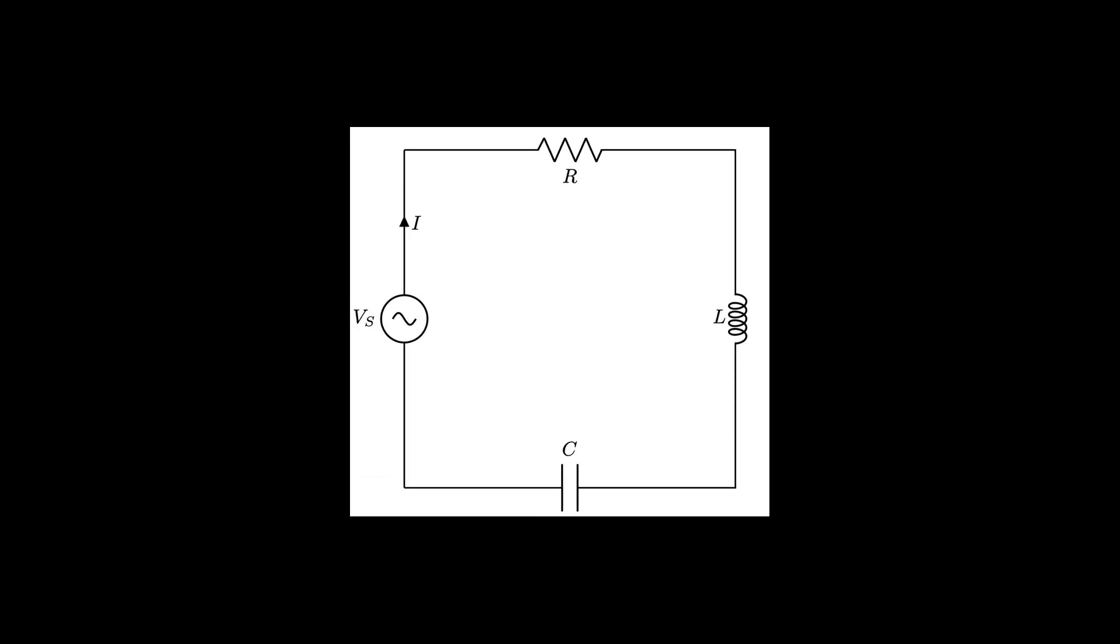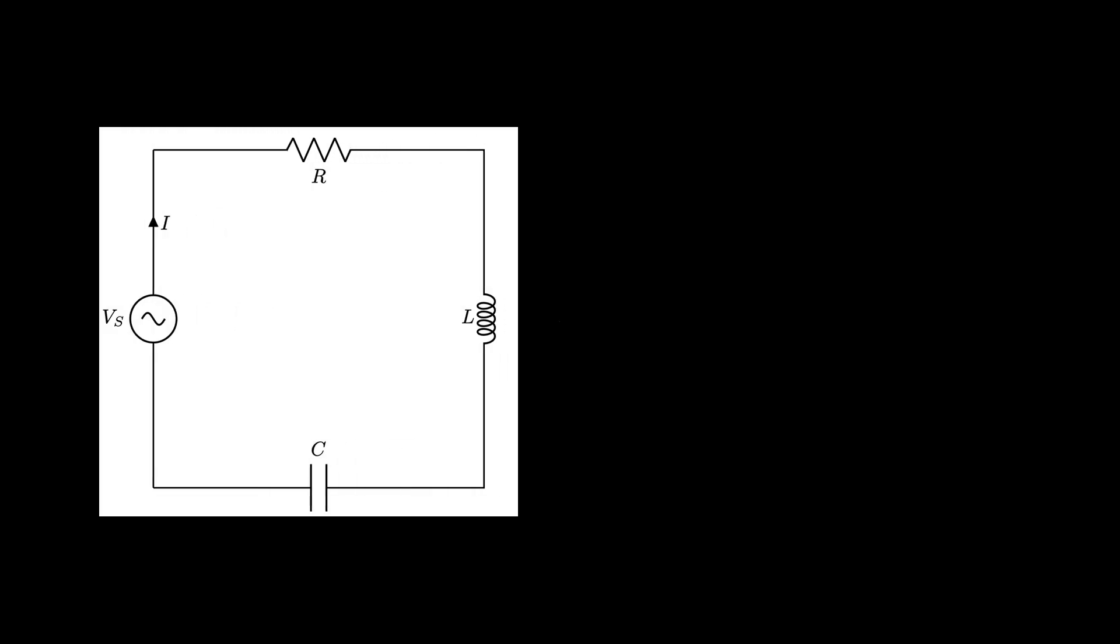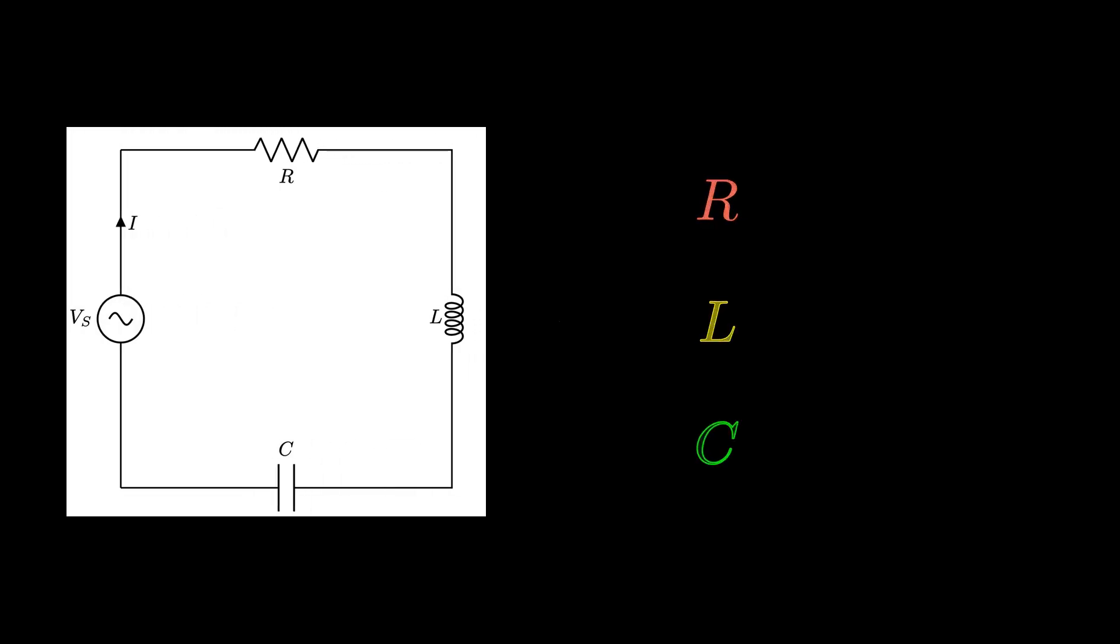Using impedances for AC circuit analysis can take away the headache of differential equations. In this example, we have an RLC series circuit with an AC voltage source. Because these components are in series, we can label each of these components Z1, Z2, and Z3. Their respective values are now shown on screen.